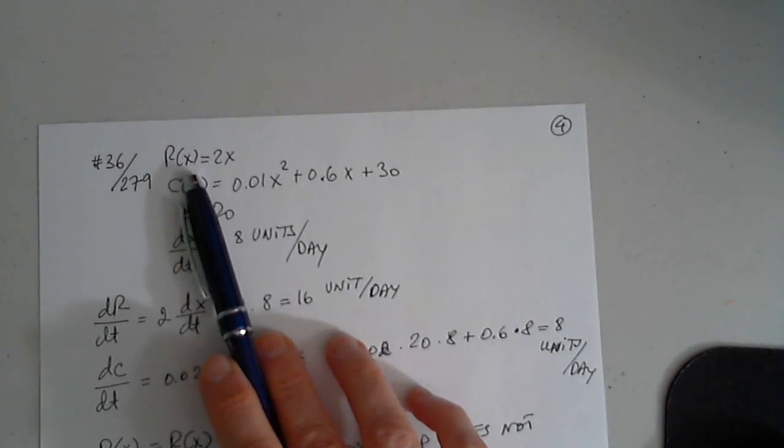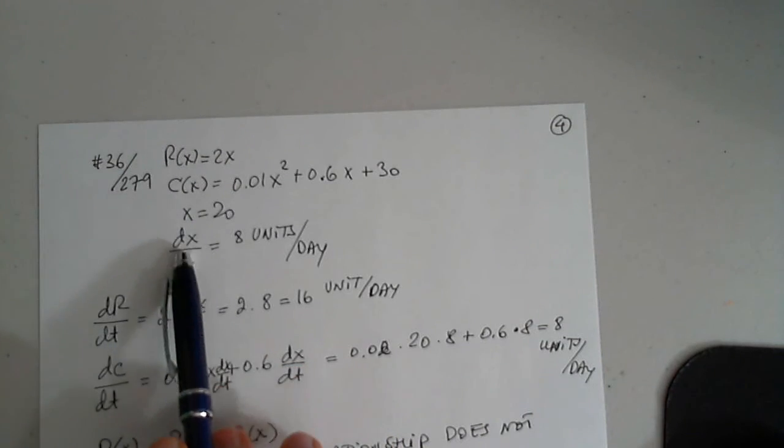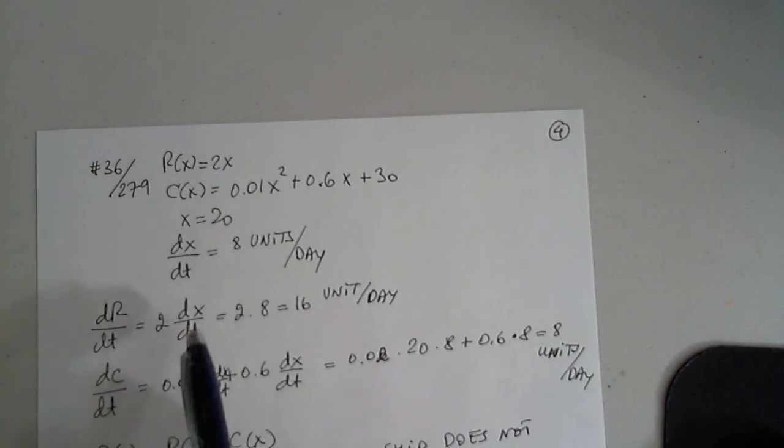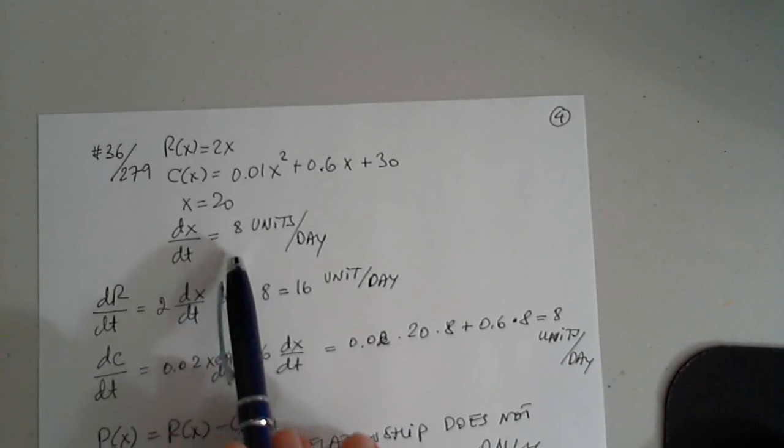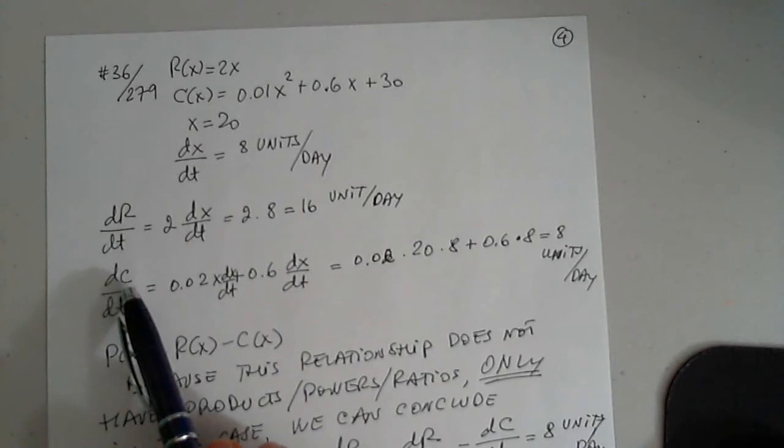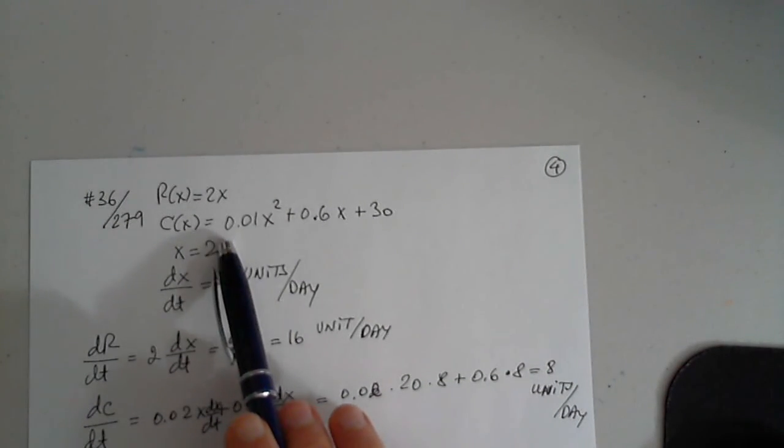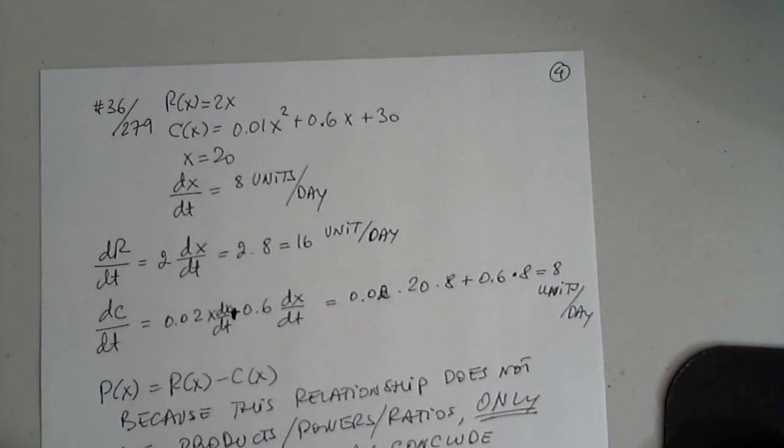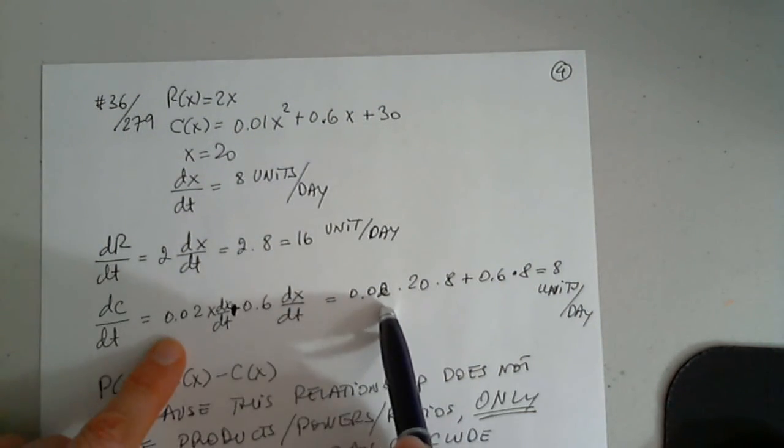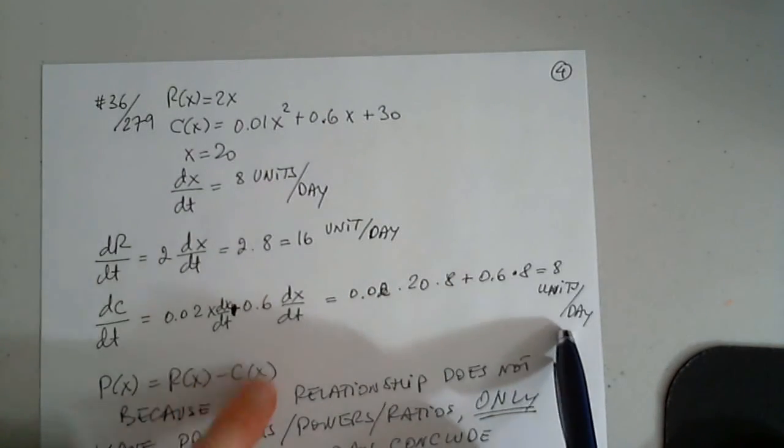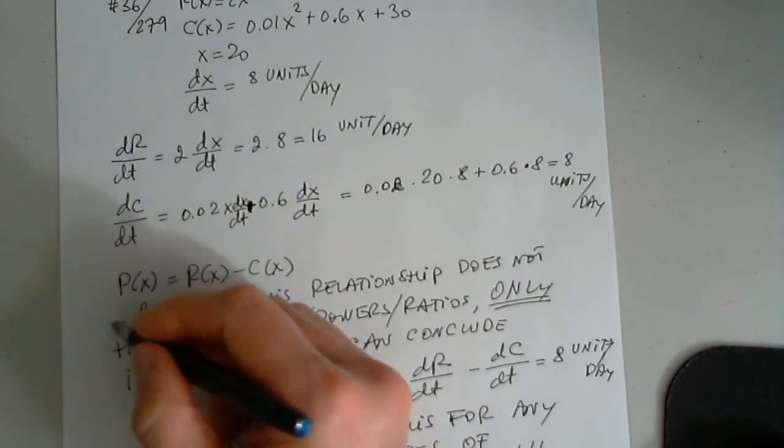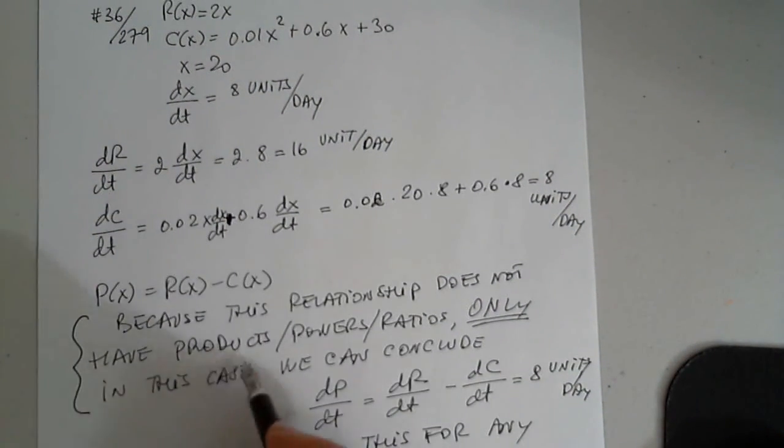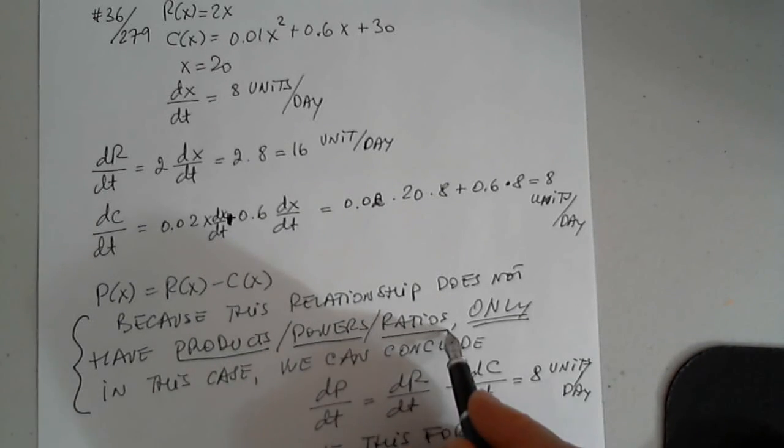Finally, we were asked to find the rate of change of revenue, cost, and profit, knowing that x is also a function of time. So 2 times x is 2 times dx dt. I just plugged in the numbers, 2 and 8, and I got 16 units per day. dc over dt, I differentiated 0.02 times x times dx over dt plus 0.6 times dx over dt. I just plugged in the numbers, 0.02 times 20 times 8 plus 0.6 times 8, and I got 8 units. This is the relationship, and this is correct. We can assume 16 minus 8 only because this relationship does not have products, powers, ratios. It's a linear relationship.